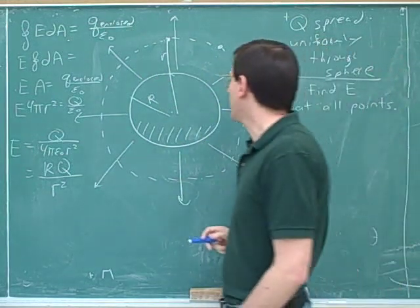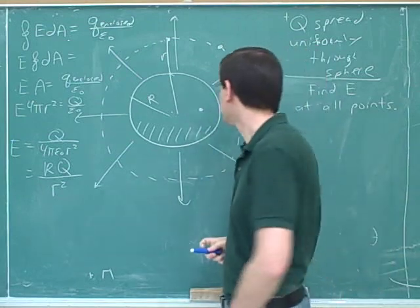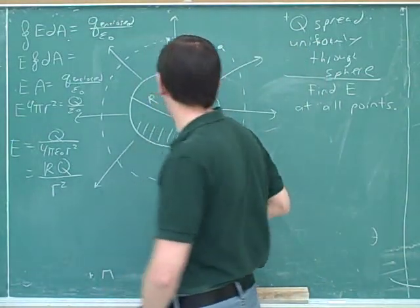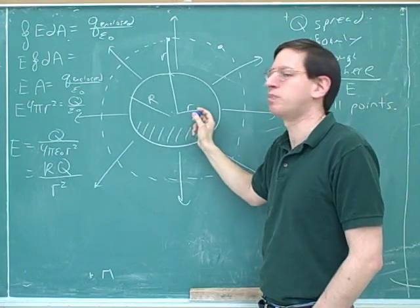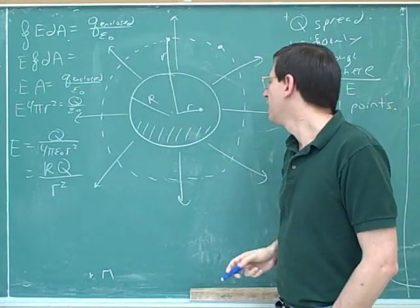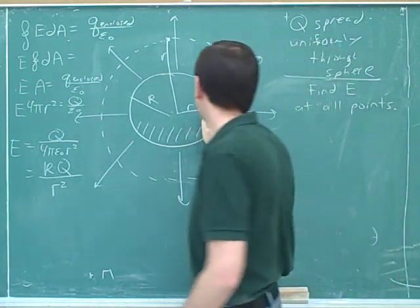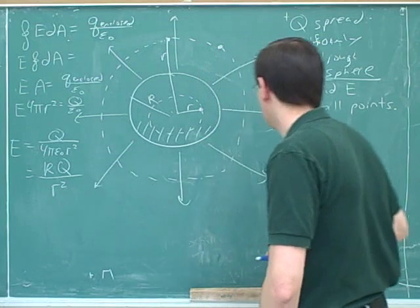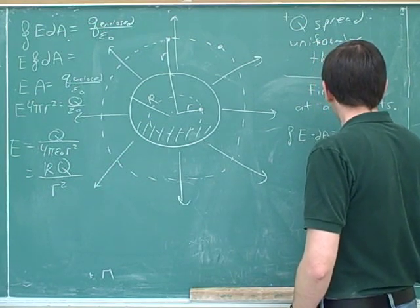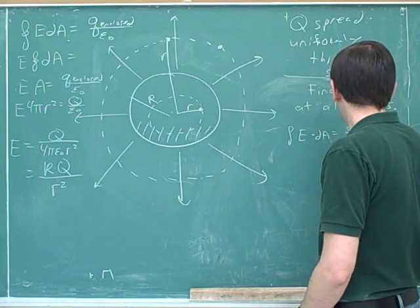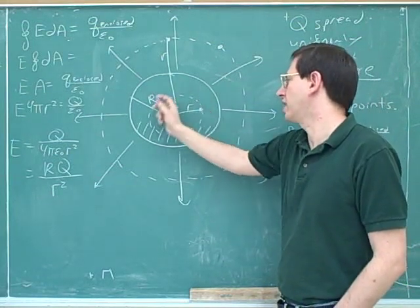We haven't answered the whole question yet — we've only found the electric field for points outside the sphere, but the question asks us to find the field at all points. So we also have to find the electric field at a point inside the sphere. Now lowercase r would be the inner distance. We're still using capital R for the entire ball and lowercase r for the point in space. We have to go through this process again — the symmetrical surface to draw is still a sphere.